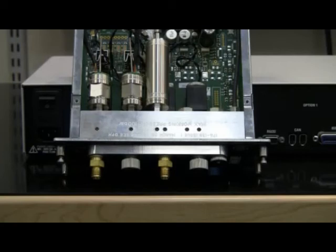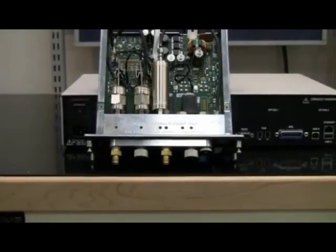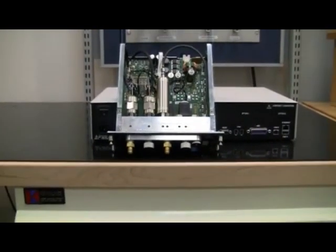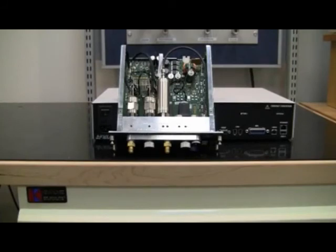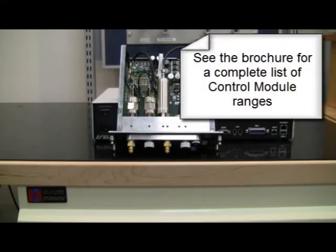A spare module on the shelf completely eliminates downtime. Since the pulse width modulated control valves are matched to the specific control module pressure range, optimal pressure control speed and stability is assured when changing control module ranges. A variety of control module ranges are available, from as low as 10 inches of water full scale or 25 millibar, to as high as 3000 psi full scale or 210 bar, providing maximum flexibility and rangeability in a single PACE 5000.